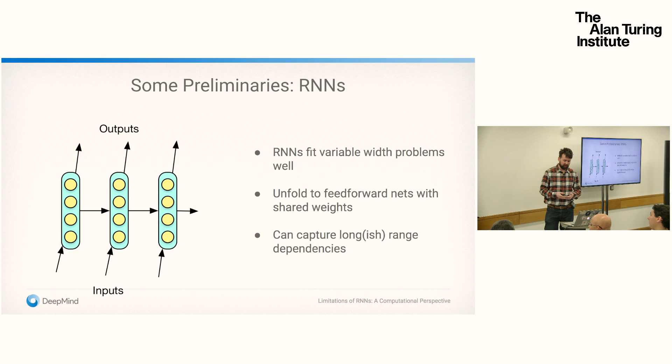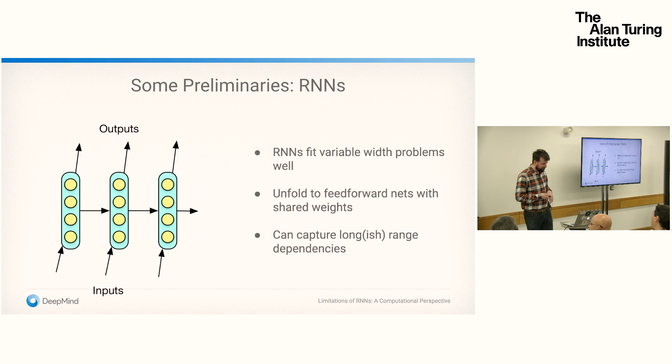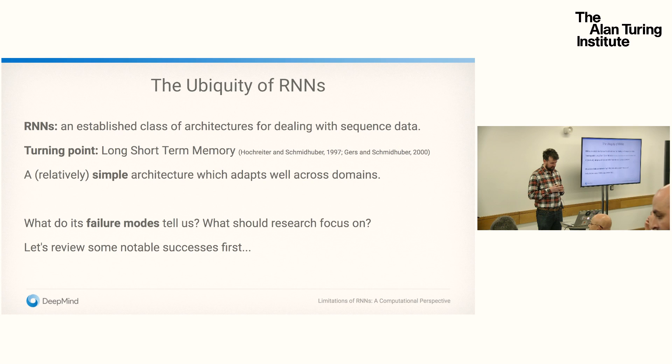We talk about unrolling a recurrent cell over time to form a recurrent neural network — you're effectively constructing on the fly a feed-forward network with shared weights along the temporal dimension, along the dimension of symbols. You can unfold it to process sequences of any length without a bound. These networks are successful in capturing long-range dependencies, and this architecture is an established class for dealing with sequence data.